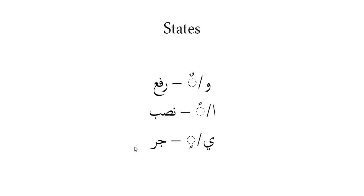Raf'ah is shown — among other ways — with a dhamma or with a wao. These states are reflected at the end of the word, the last letter. That's why in Kitab we focus on the Ba, and in Bilal we focus on the Lam. Nasab is reflected with a fathah or an alif, and jar is reflected with a kasrah or a ya.